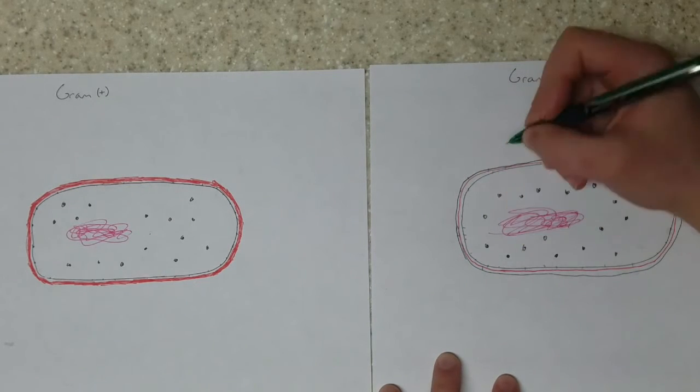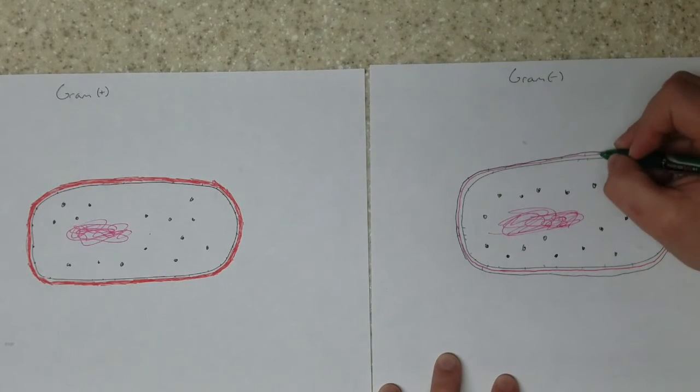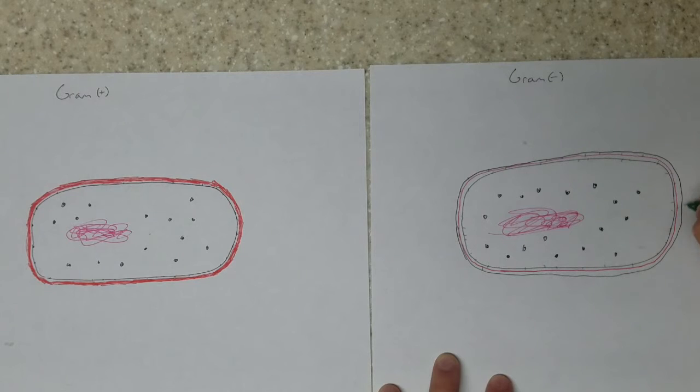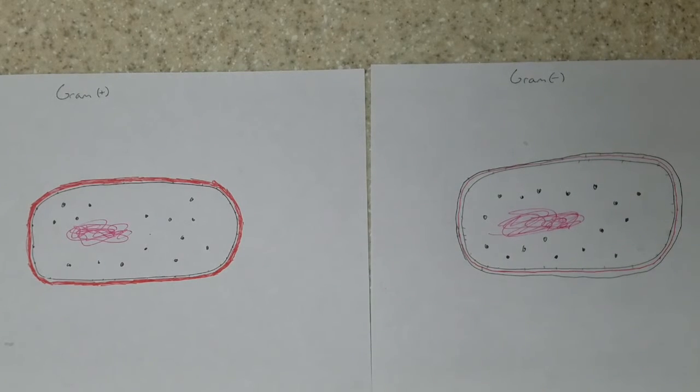And here I'm drawing some bronz lipoproteins to connect the cell wall with the cell membrane. Only gram-negative cells have that.